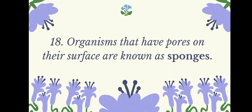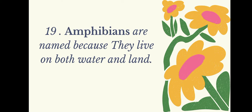Organisms that have pores on their surface are known as sponges. Amphibians are named because they live on both water and land.